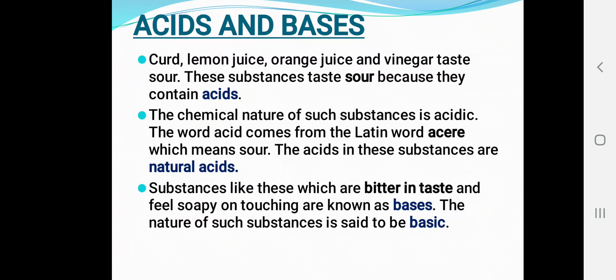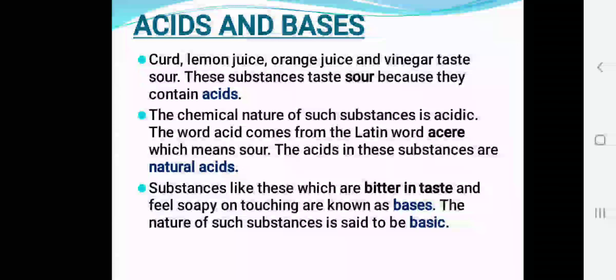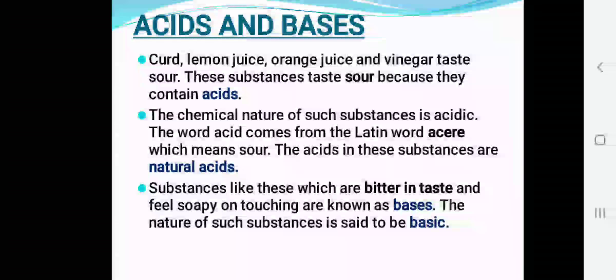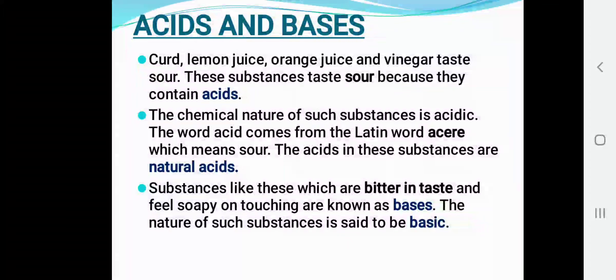Acids are sour in taste. The chemical nature of such substances is known as acidic. The word acid comes from the Latin word acere, which means sour. The acids in these substances — curd, lemon juice, orange juice, vinegar — are natural acids; they occur naturally.